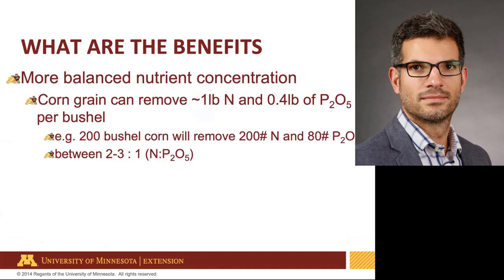What are the benefits? As Glenn mentioned, there is a lack of balance between the nutrient concentration in manure and the nutrient requirements of most crops. For example, corn grain can remove about 1 pound of nitrogen and 0.4 pounds of P₂O₅ per bushel of grain produced. So a corn field producing 200 bushels removes about 200 pounds of nitrogen and 80 pounds of P₂O₅ — a ratio of roughly 2.5-to-1 between nitrogen and P₂O₅.